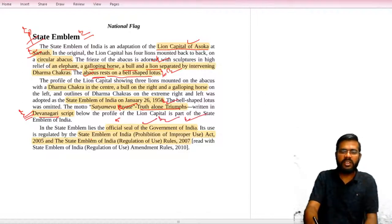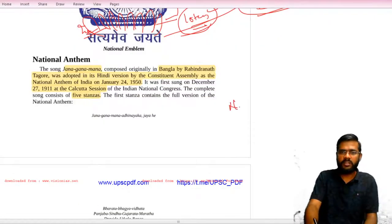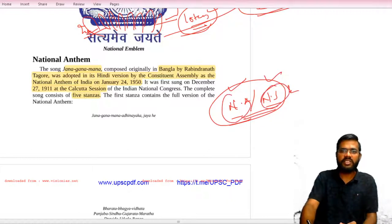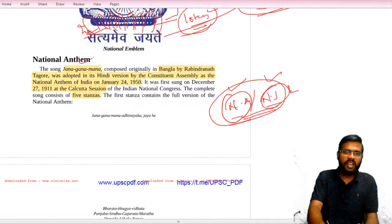There is the State Emblem of India (Prohibition of Improper Use) Act 2005, which provides punishment and provisions for misuse. Then coming to the national anthem. Never confuse the national anthem with the national song—very very important. The national anthem is treated at par with the national song in importance.